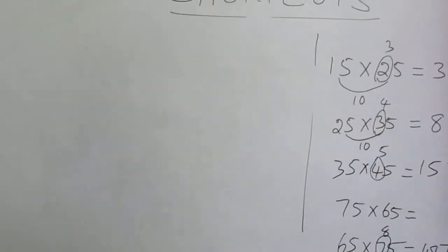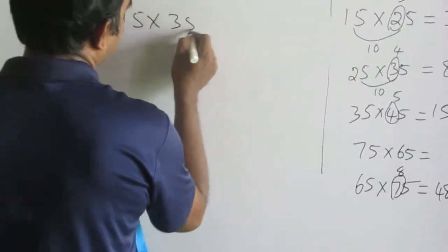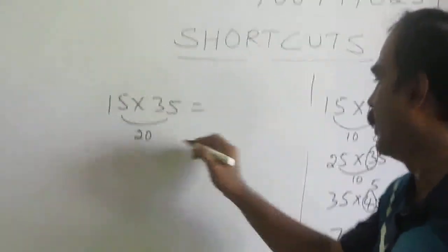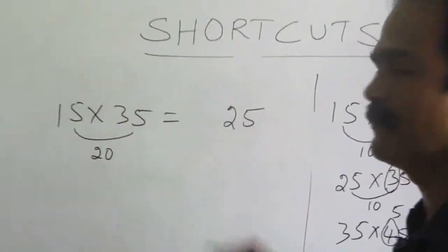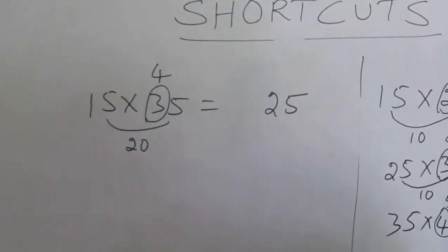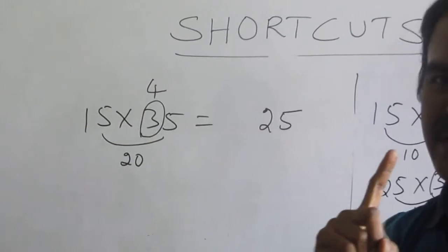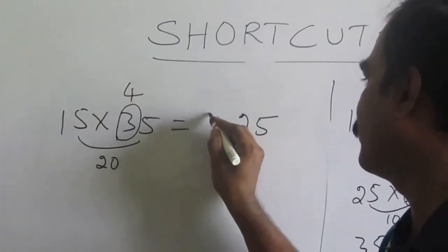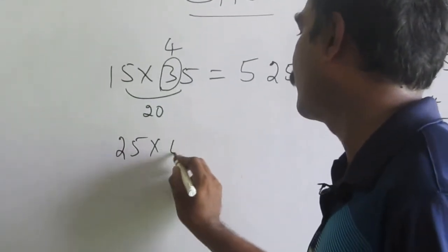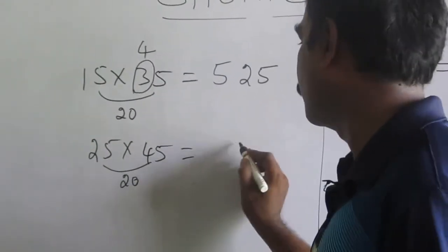Now we have seen numbers with a gap of 10. Let us do 15 times 35 — the gap between the numbers is 20. When the gap is 20, the last two digits will be 25. For the first term, it is not just 1 times 4; you have to do 1 times 4 plus 1, which is 5. So the answer is 525. What is 25 times 45? The gap between the numbers is 20, so the last two digits will be 25.